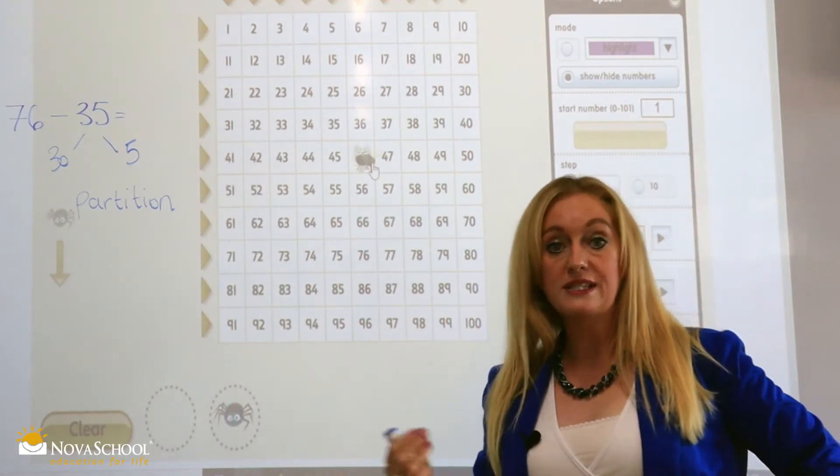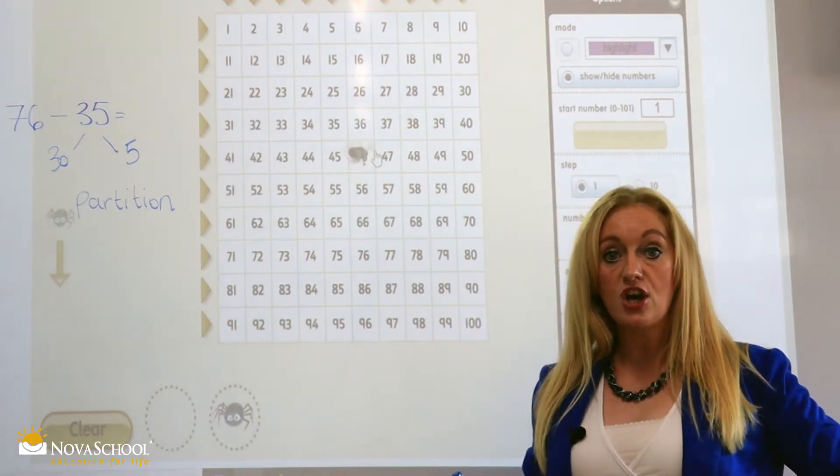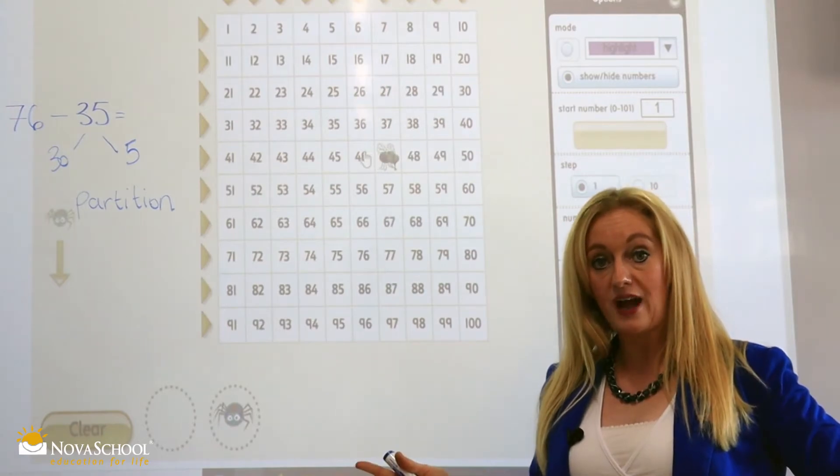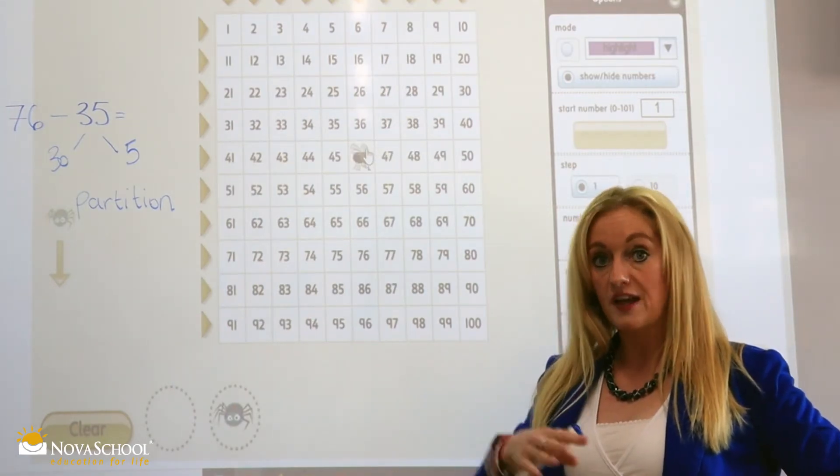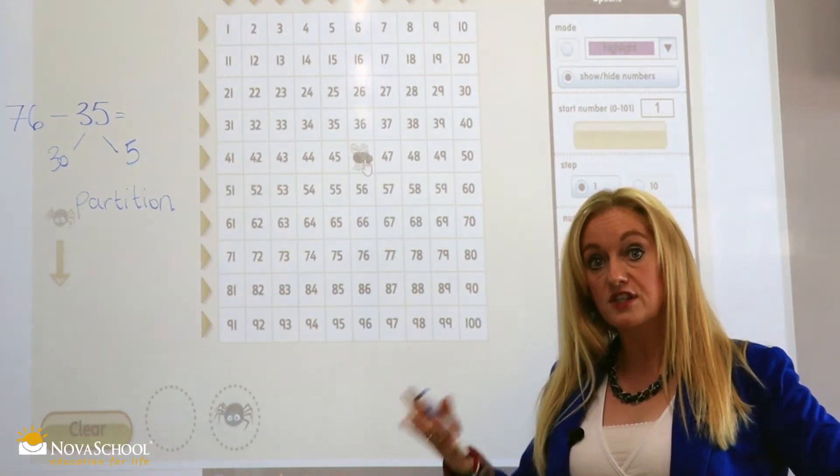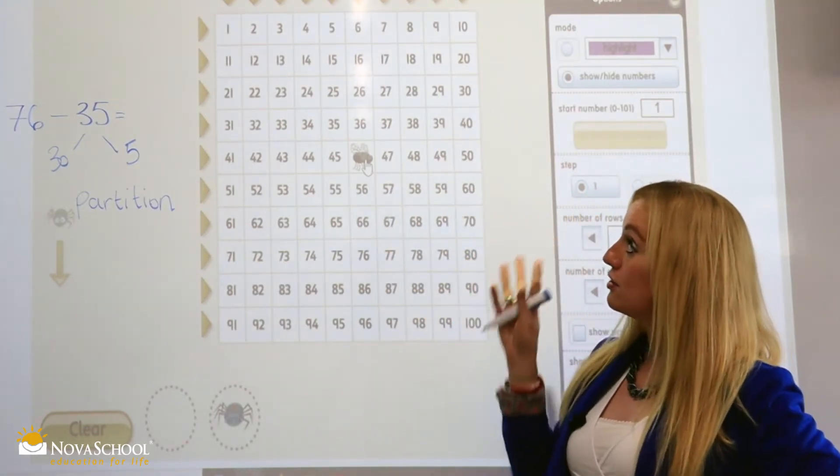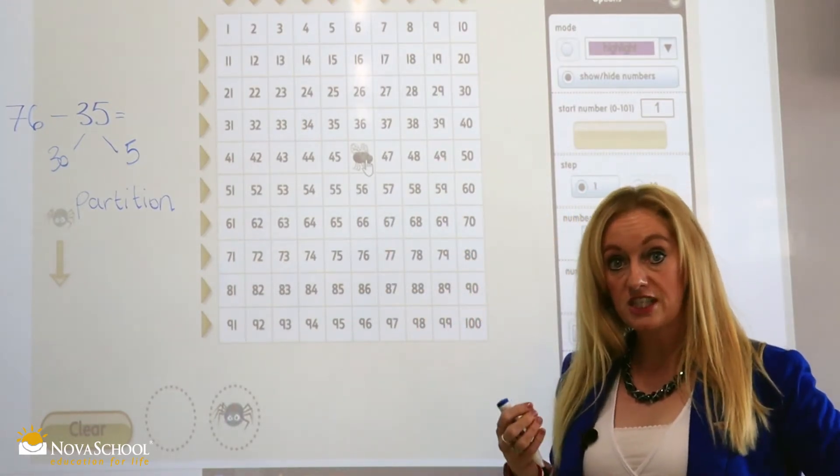so now we're on 46. We have currently done 76 subtract 30 and that's part of, that's step 1, part of the subtraction using the number square and partitioning. Okay,